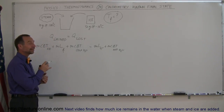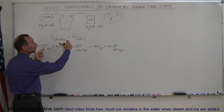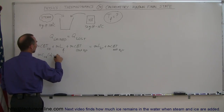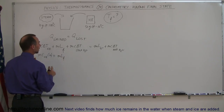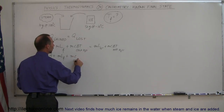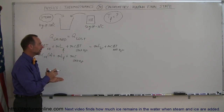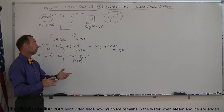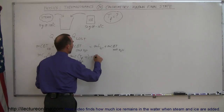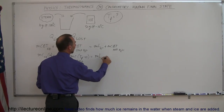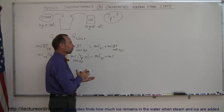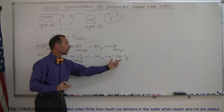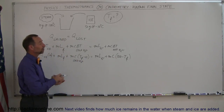Now we write out the delta T's as positive quantities. The first term is mc of the ice times 10 (going from minus 10 to 0). Then plus m·L_f for the melting. Then plus mc of the cold water times (T_final minus 0). On the right side, m·L_v for the steam condensing, plus mc of the hot water times (100 minus T_final), written this way to ensure a positive quantity since T_final will be between 0 and 100.